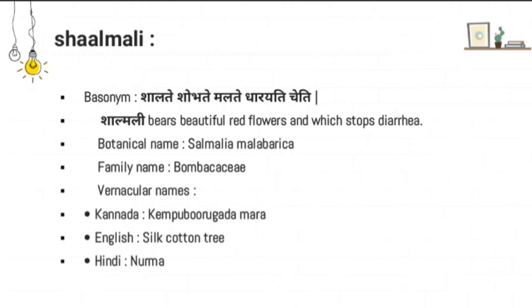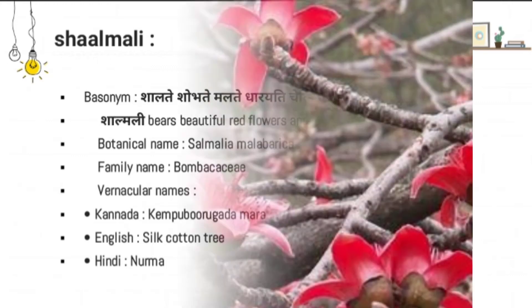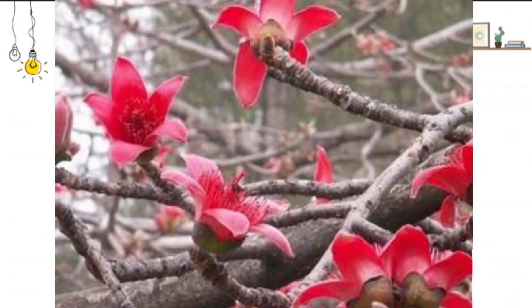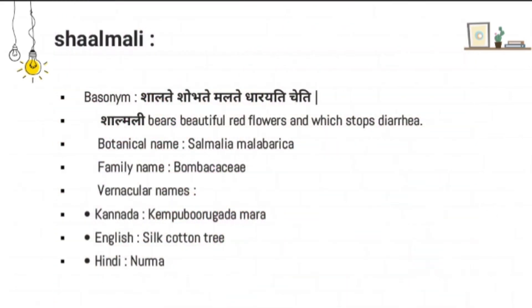What is the basonym? Shalate Shobhate Malate Dharayati Cheti. Shalmali is the one — Shalate Shobhate — which bears beautiful red flowers by which it attracts people. Malate Dharayati Cheti means, by its property, its karma is to stop diarrhea. So one which stops diarrhea is nothing but the Shalmali.